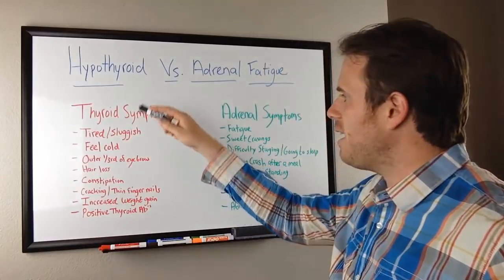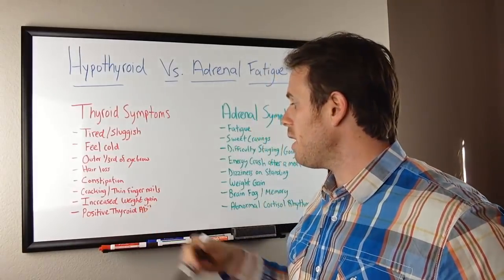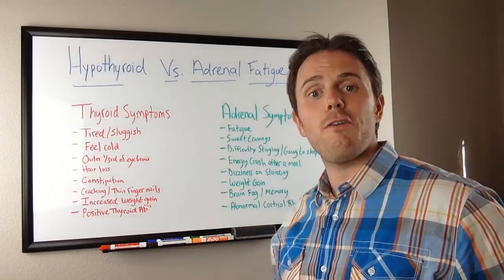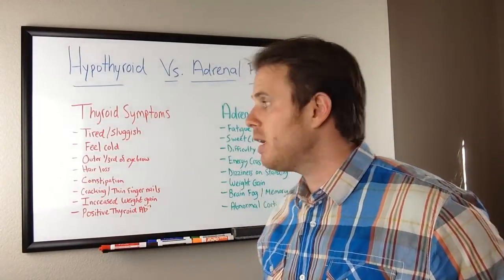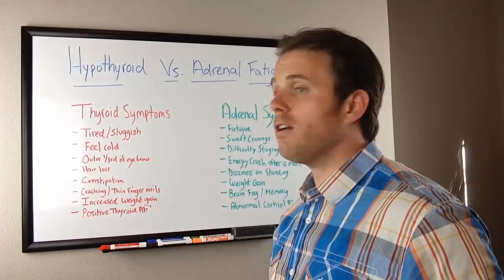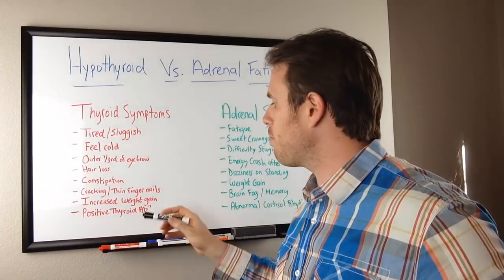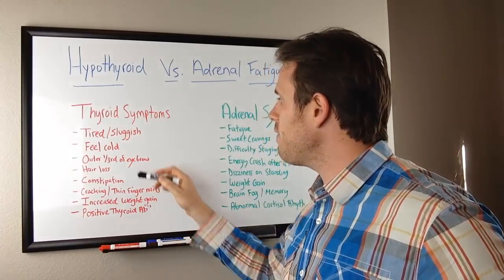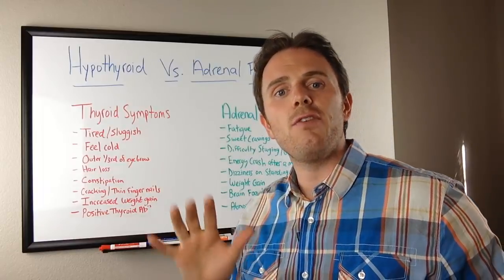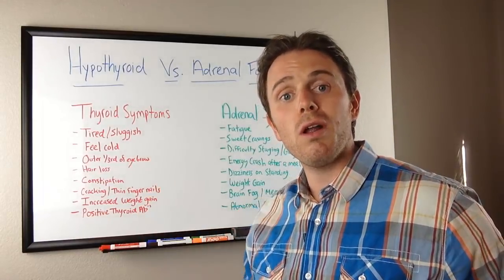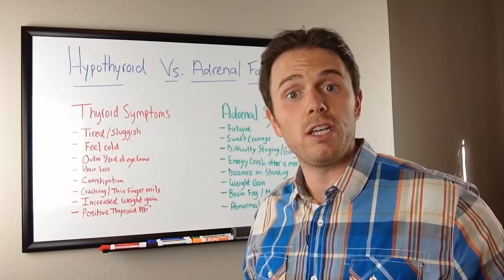Take a look at those thyroid symptoms — there are eight listed. If you have the bottom one — positive thyroid antibodies — give yourself plus five points. For any other symptom on the list, give yourself plus one point. If you have five points or more, you more than likely have a thyroid issue.